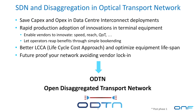The idea is that we're going to use the ODTN project that brings SDN and disaggregation in the optical network to save CAPEX and OPEX in the data center interconnect deployments, allowing rapid production adoption of innovations in terminal equipment, enabling the vendors to innovate in speed, reach, quality of service and transmission, and letting the operators reap the benefits by bookending the transponders and achieving a better life cycle approach for each component in the network, optimizing the equipment lifespan. And also, through the use of SDN, disaggregation, and open APIs, future-proof their network, avoiding vendor lock-in.